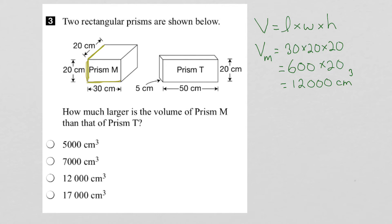Now let's look at prism T. Here we have a length along here, which is 50 cm. The width is this unit right here, which is 5 cm. And the height is 20 cm.